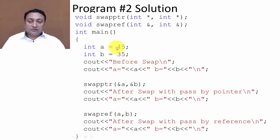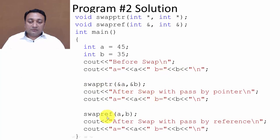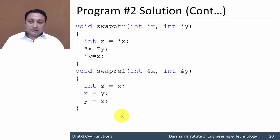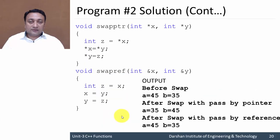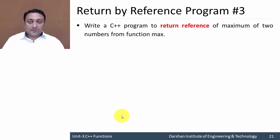The initial values of a and b were 45 and 35. Before swapping we printed a and b, then called the swap using pointer, and after swapping called the swap with reference. Here is the function definition. Next is returning by reference.